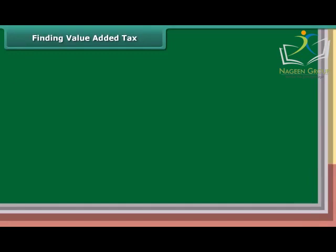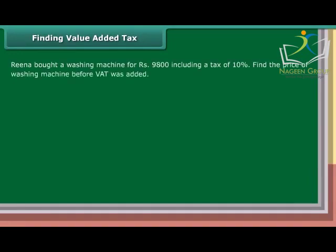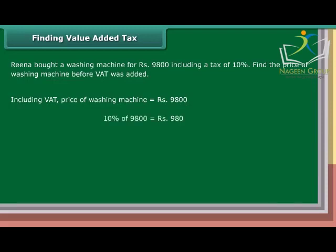Finding Value Added Tax: Rina bought a washing machine for Rs. 9,800 including a tax of 10%. Find the price of the washing machine before VAT was added. 10% of 9,800 equals Rs. 980. Price before VAT added equals Rs. 9,800 minus Rs. 980, which equals Rs. 8,800.